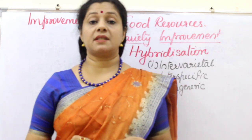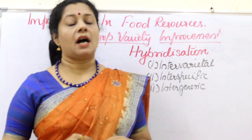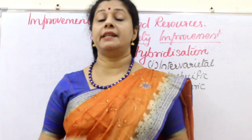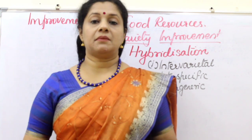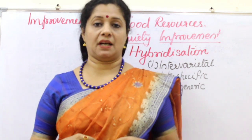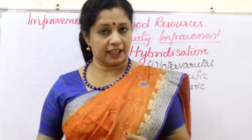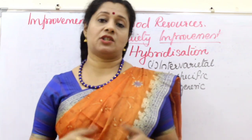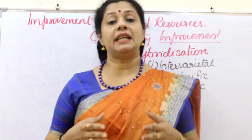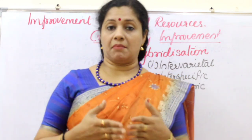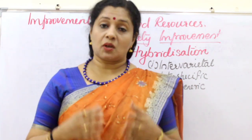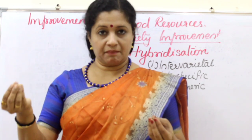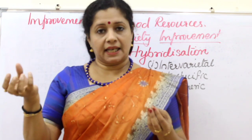In crop variety improvement, the first method is hybridization. Hybridization means the crossing of genetically dissimilar parents. If I cross two same types of plants, it is not going to give me a new variety. So I have to choose two varieties to hybridize or cross — that is, we are combining genetically dissimilar parents. The process is hybridization, where we take the pollen grain from one of the plants having one of the desired qualities.